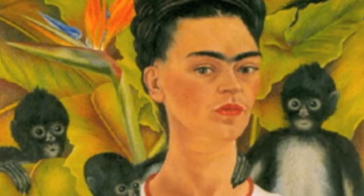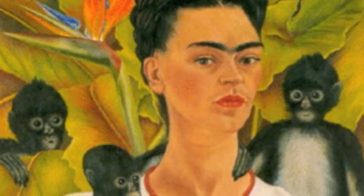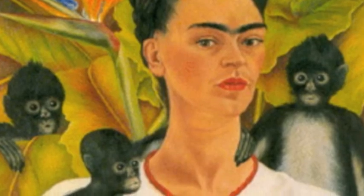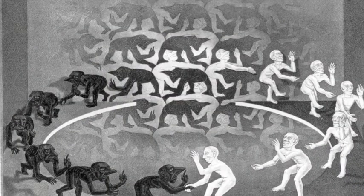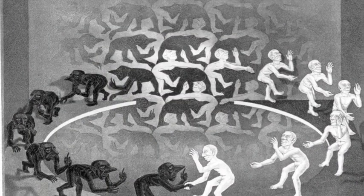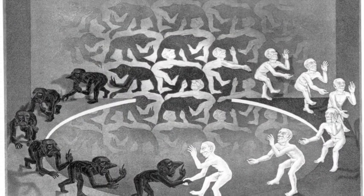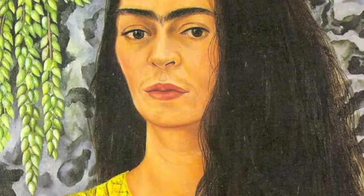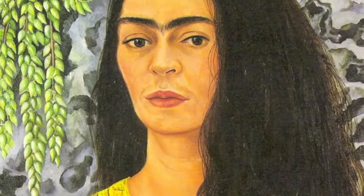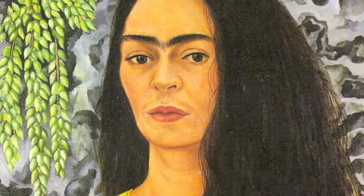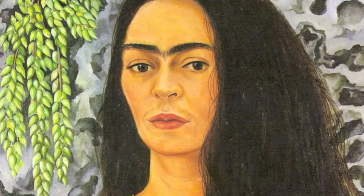Frida Kahlo worked mostly with paintings and self-portraits, while M.C. Escher worked mostly with designs and shapes. Frida Kahlo preferred to use bright colors through oil paint, while M.C. Escher preferred to use pencil drawings.